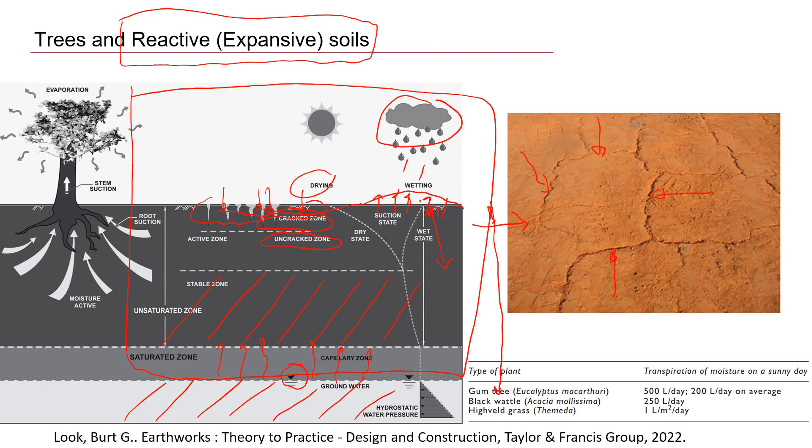Suction happens when there is not enough moisture in the soil. And this is the effect of tree and tree roots.